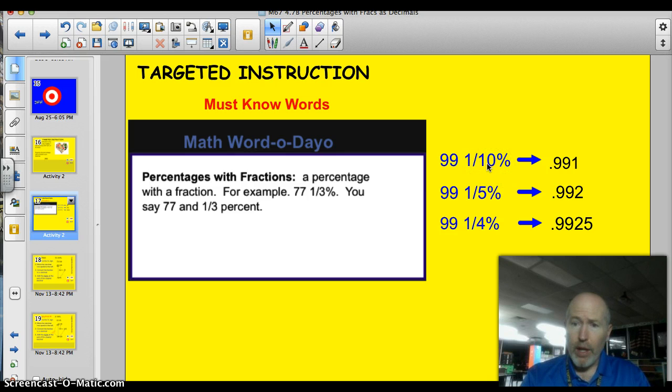Well, 1 tenth is 0.1, right? So you just tack that 1 on. Remember, you drop the other decimal point. So here's 99% and there's the extra tenth. 0.991 or 99 and 1 tenths percent. Here's 99 and 1 fifth percent. 1 fifth is 0.2. 0.992. Here's the 99% converted to a decimal. It's 0.99, tack on the 2.